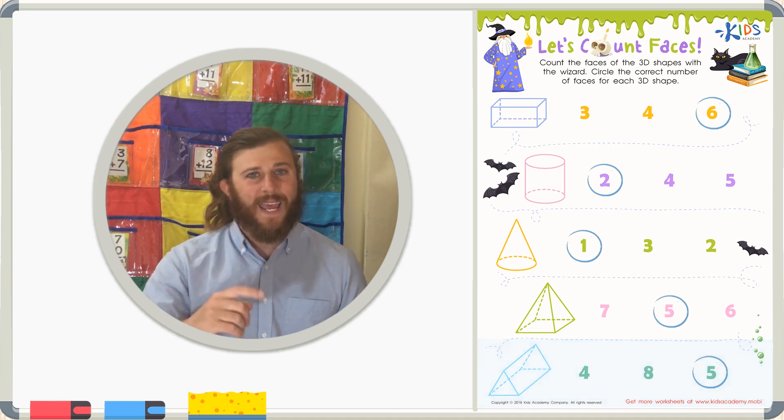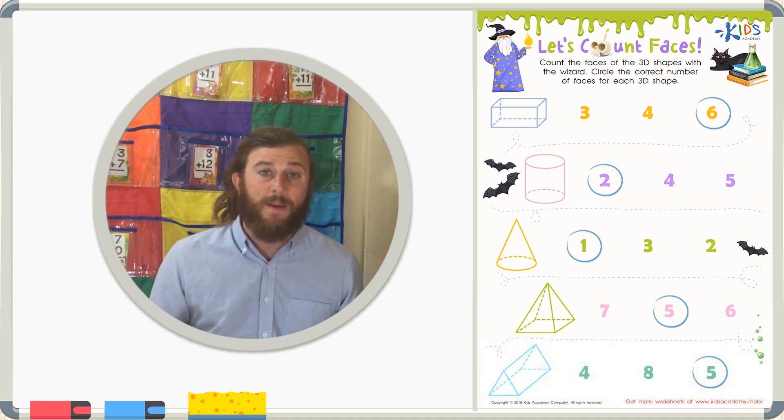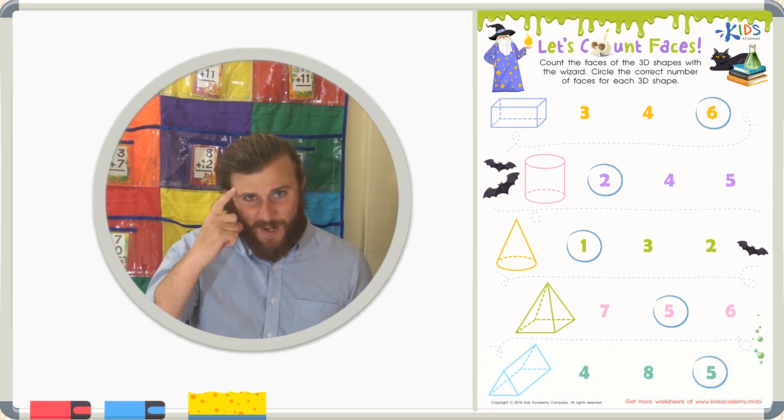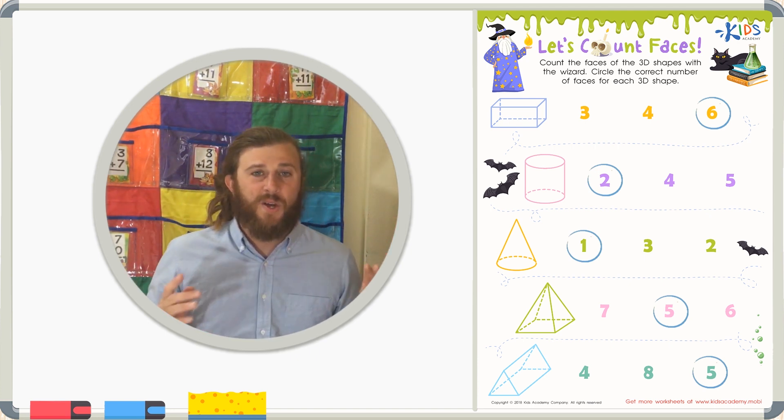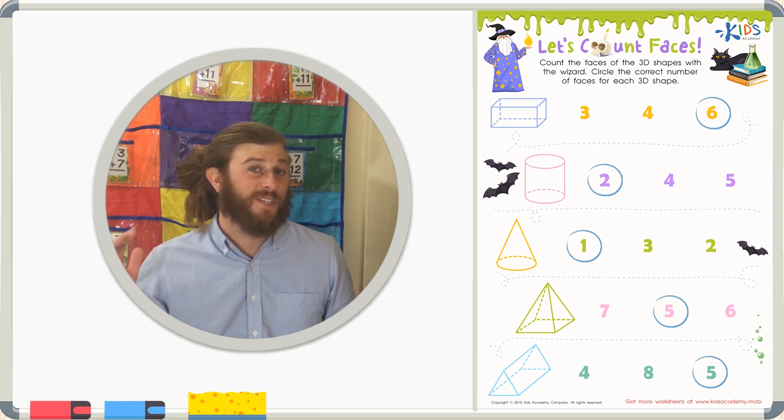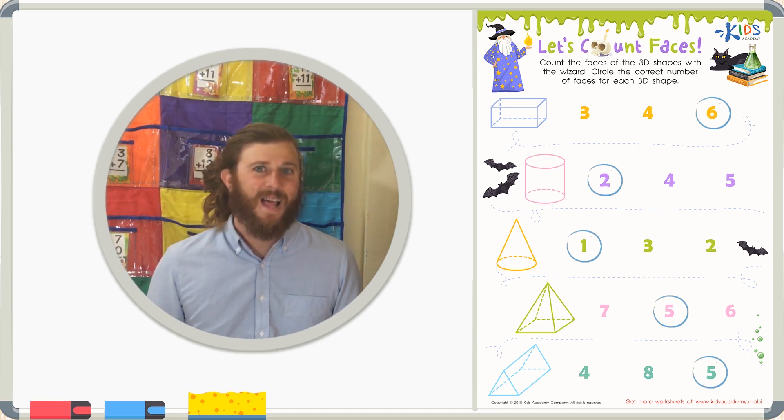Boys and girls, remember that when you want to count faces of a 3D shape, you have to use your imagination. Because when there's one side, if you see those dotted lines, they're usually trying to represent the opposite side or the other face. Thanks for watching, boys and girls, and we'll see you next time.